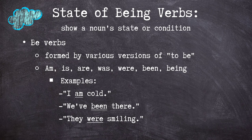State of being verbs show a noun's condition or state. These include be verbs, which are formed by the various different versions of the infinitive verb 'to be.' Am, is, are, was, were, be, been, and being are all versions of 'be' and make up be verbs. Our examples — I am cold, we've been there, and they were smiling — all show different versions of the verb to be.